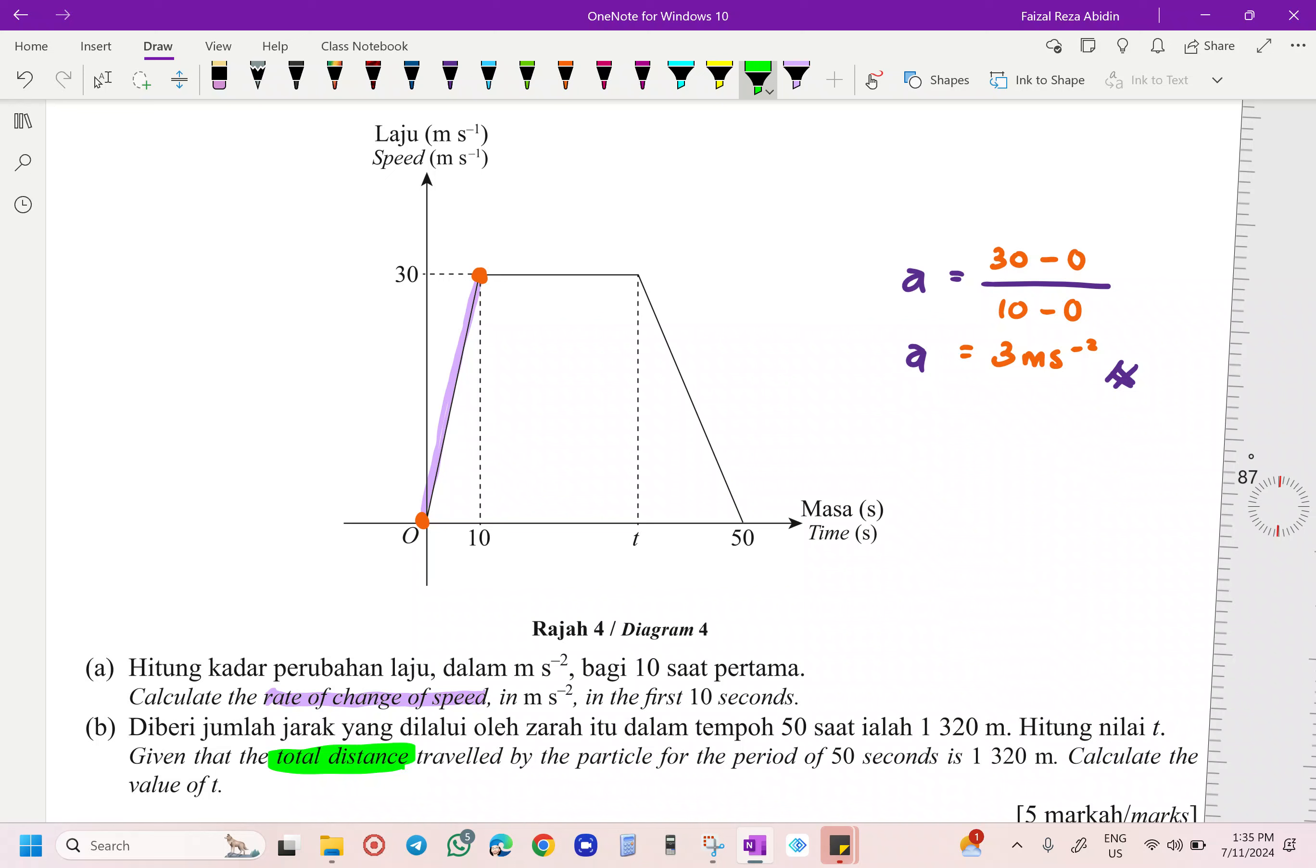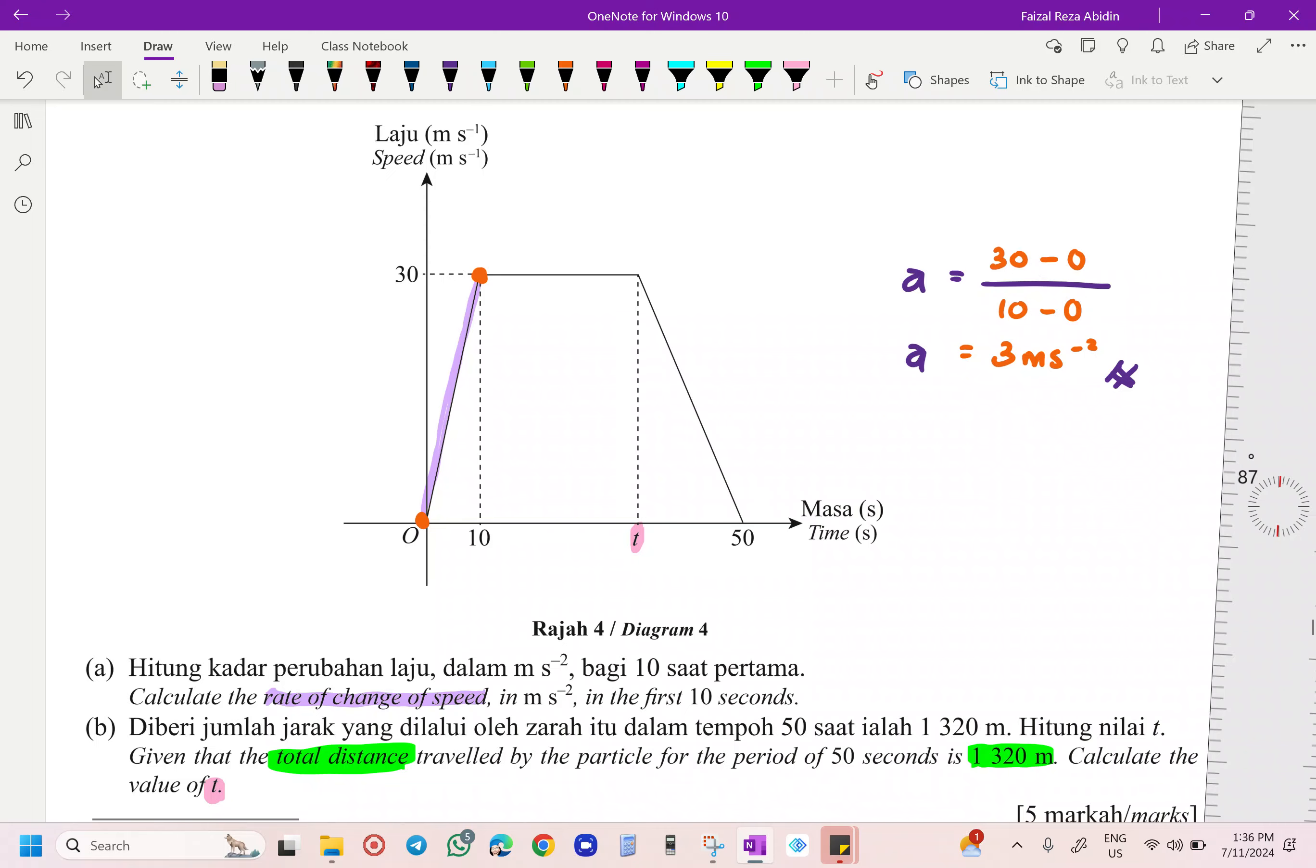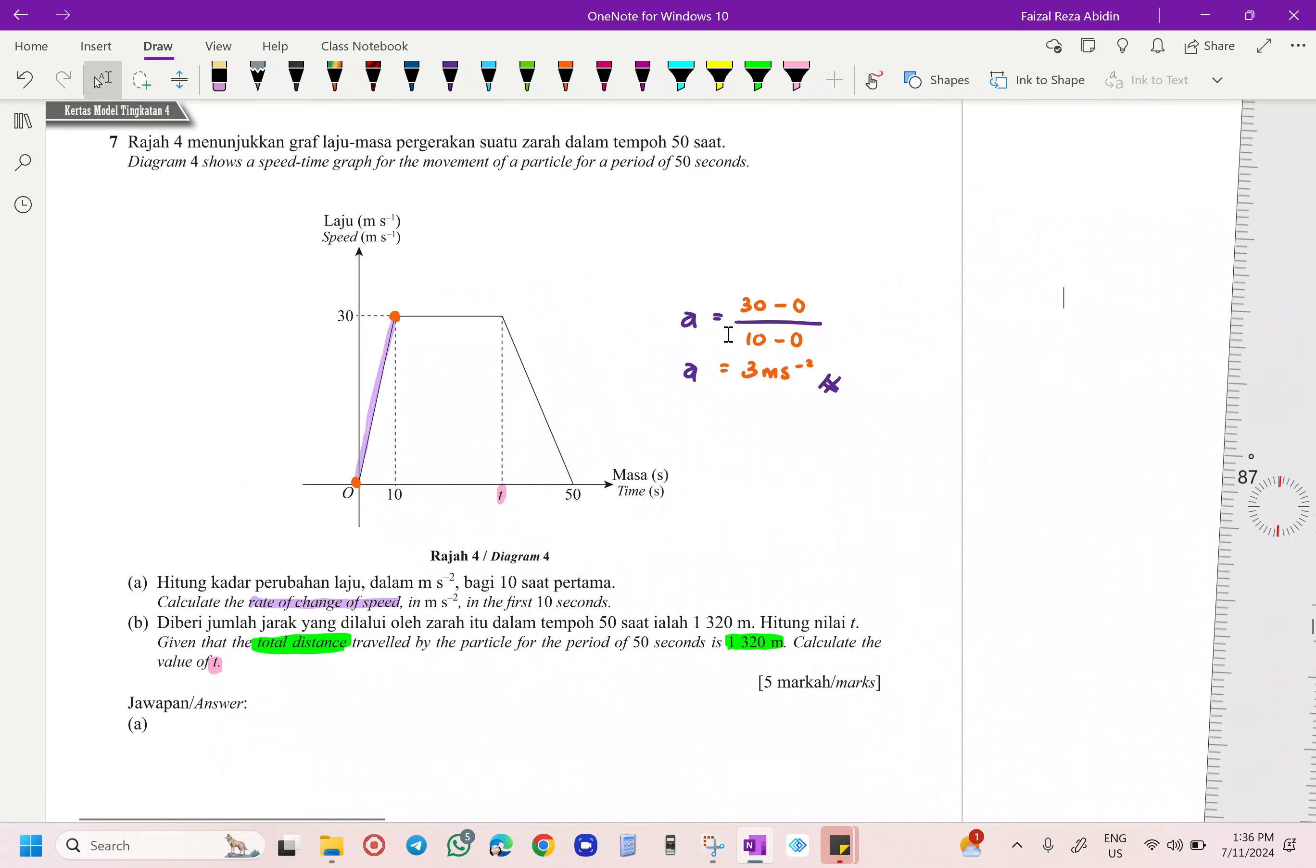So you see over here, total distance here for 50 seconds is going to be 1,320 meters. Okay, we are going to find the value of our T. This one, what we are going to do.